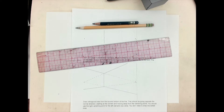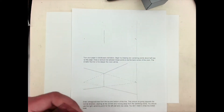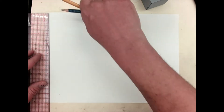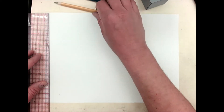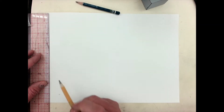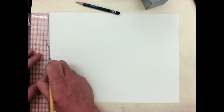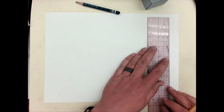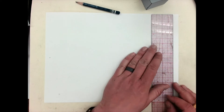Today we're going to be drawing a room interior in two-point perspective. We're going to need a ruler, a pencil, and paper. The sheet here shows us the steps through. We want to start with our paper in landscape orientation so it's wide, matching the aspect ratio of our field of vision.